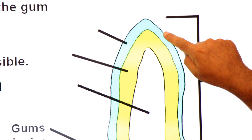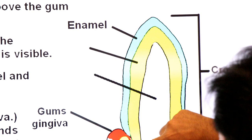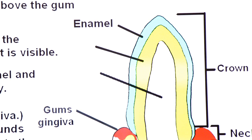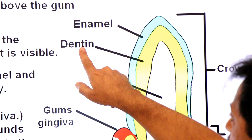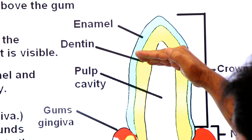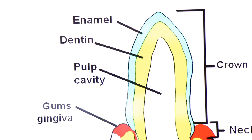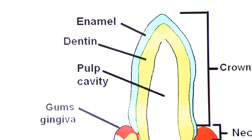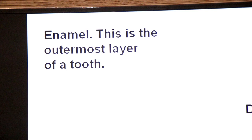The topmost substance is the hardest layer, called enamel. Below it is a less calcified layer — still hard, but not as hard as enamel. Enamel is more calcified and dentin is less calcified. Dentin contains a cavity known as the pulp cavity. So from top: enamel, then dentin, then pulp cavity inside. The outermost layer of the crown is enamel — this is the outermost layer of the tooth.